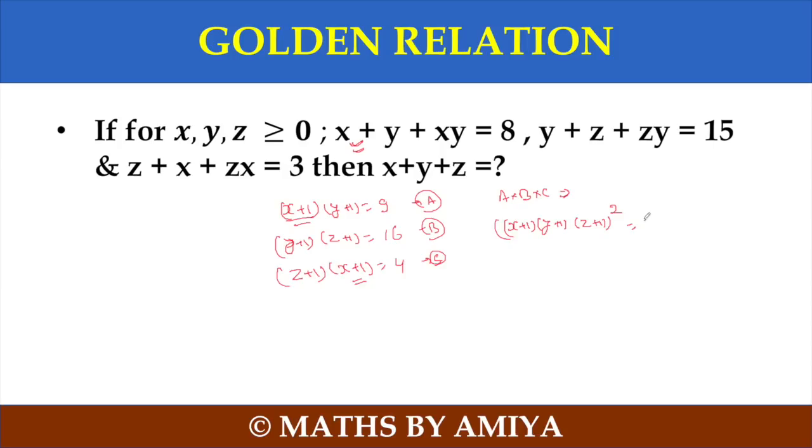And this will be 9 into 16 into 4. So x plus 1 and y plus 1 and z plus 1 ka value will be under root of all these. This one is 9 into 16 into 4 is equal to 3 into 4 into 2. So that means this one is 24. This one is 24.